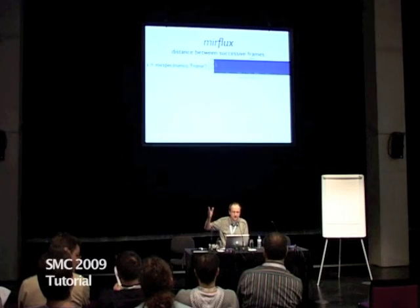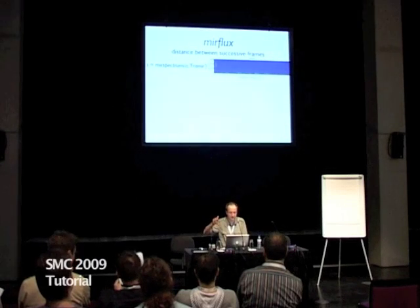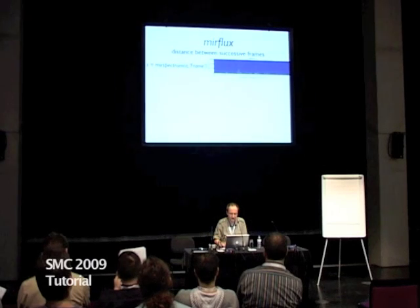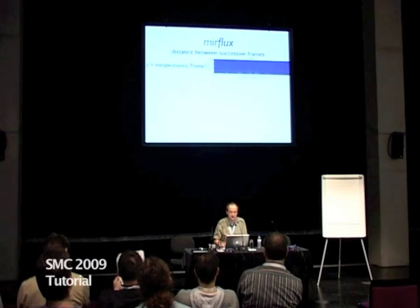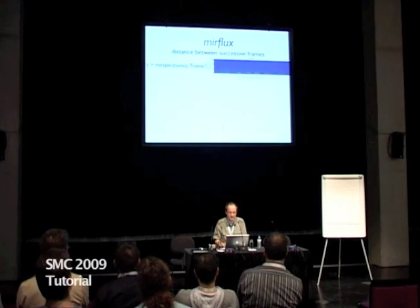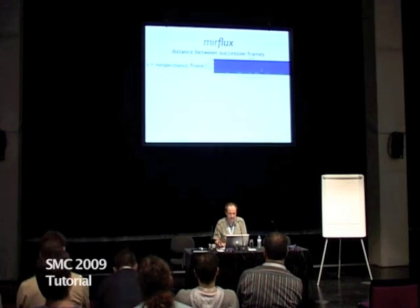For each of these frame decomposer representations, you always have this frame in column. With the colors, red means high value of the signal, and blue means low values.